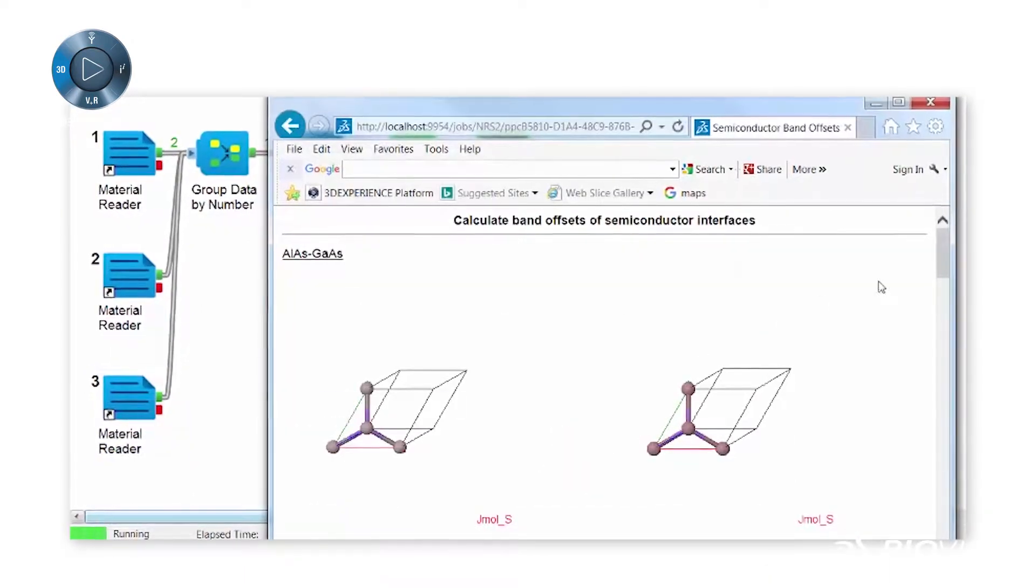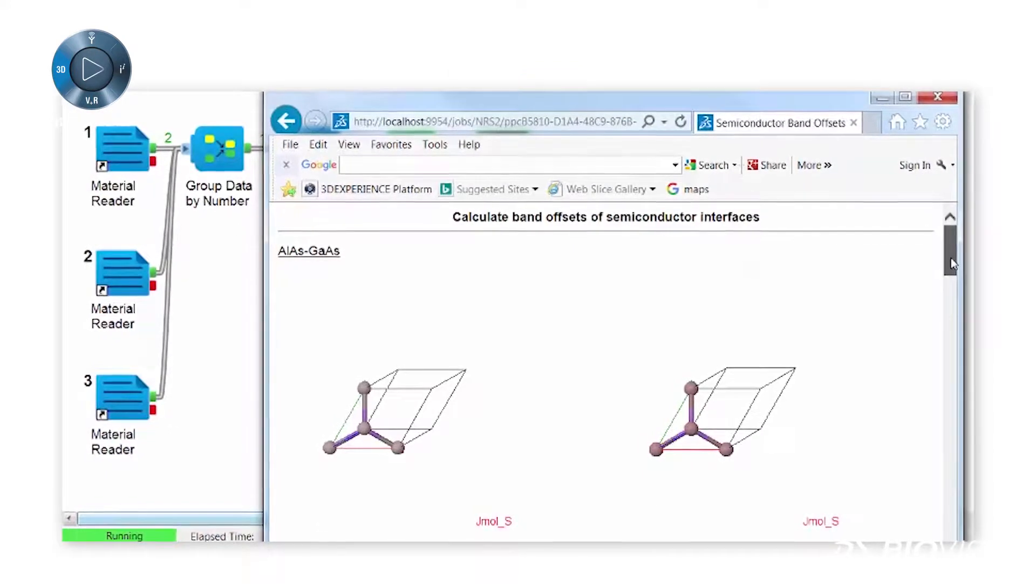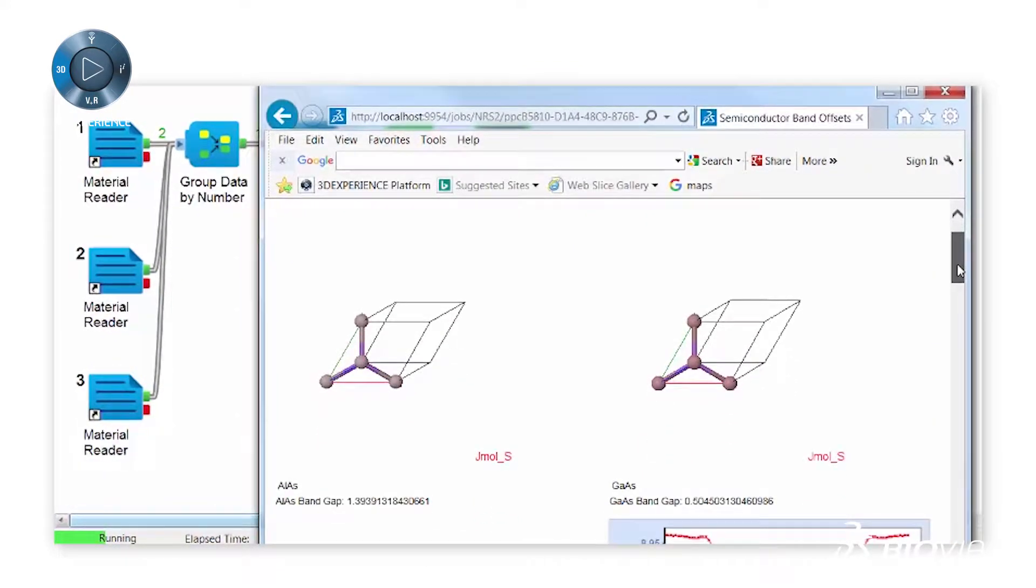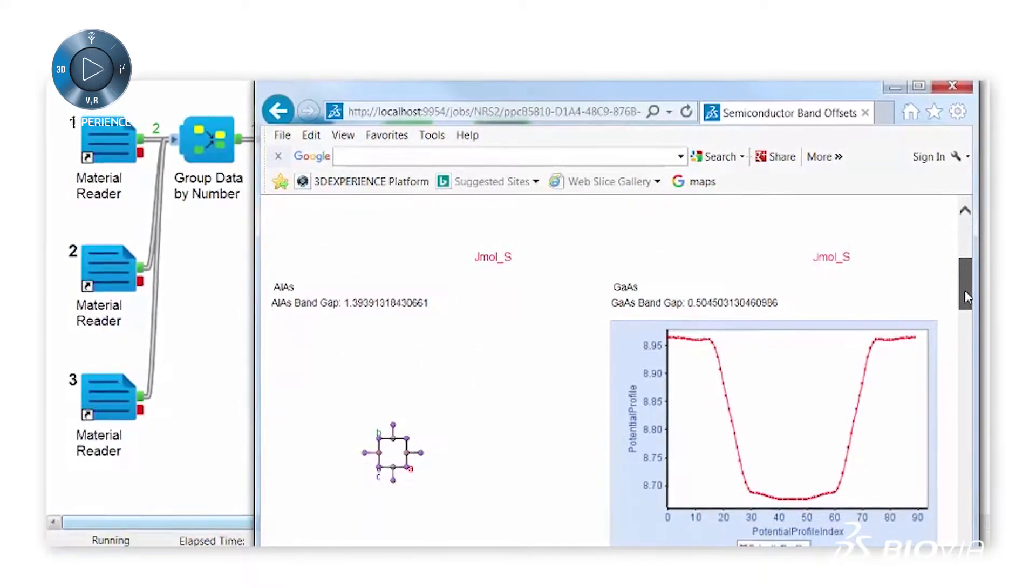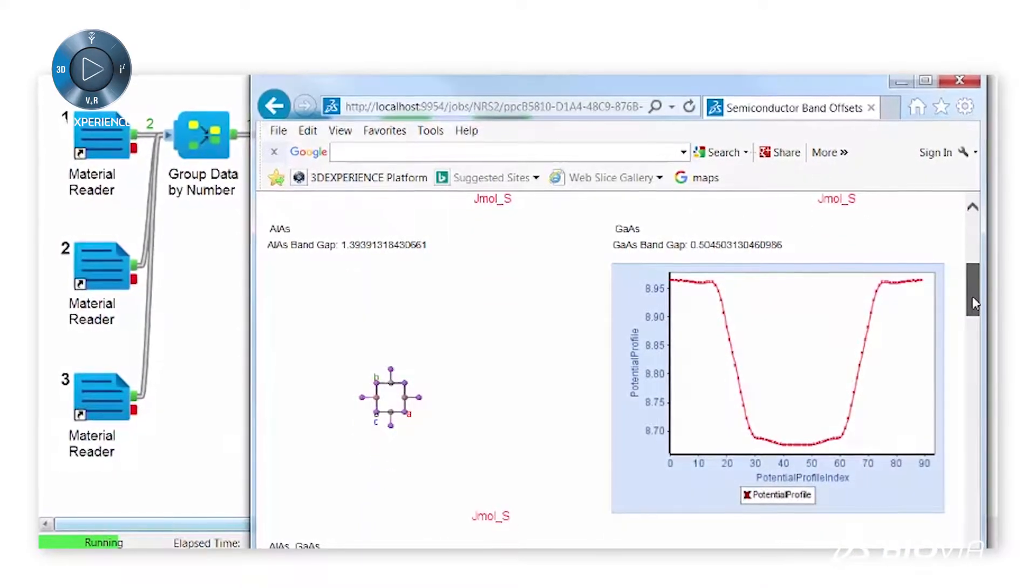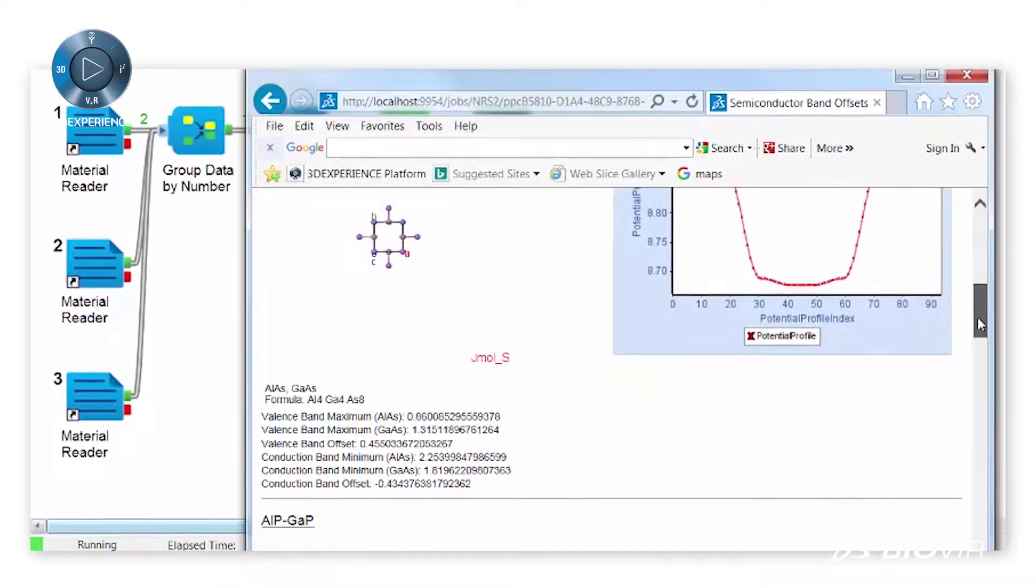Expert scientists can encapsulate and automate best practices in reusable workflows using Biovia Pipeline Pilot and its scientific collections, including the Materials Studio collection.